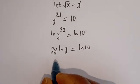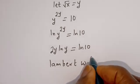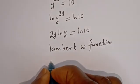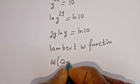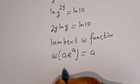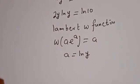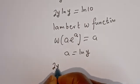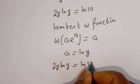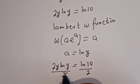At this point we can apply our Lambert W function. Recall that W applied to a times e to the power of a gives a. In this case, a is equal to ln of y. We have 2y times ln of y is equal to ln of 10. Now we can divide both sides by 2.